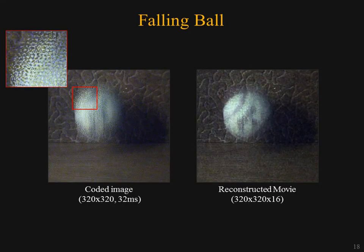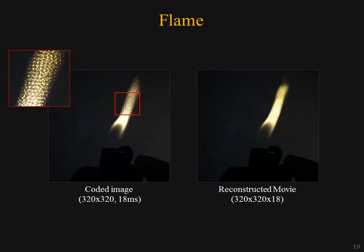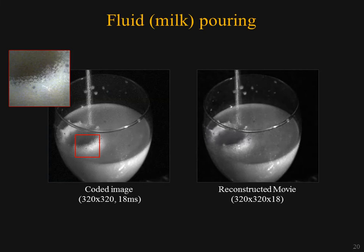Here is another example of a falling ball. This is a challenging example where we capture the motion of a lighter flame. The effective frame rate of the reconstructed movie is 1000 FPS. High-resolution details are preserved on the static lighter and on the hand. Here is an example of fluid motion — the spreading milk crown is visible on the reconstructed movie. Our technique does not rely on any analytical motion models, making such a reconstruction possible.